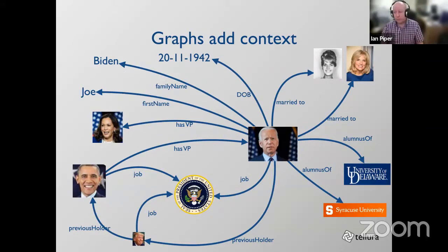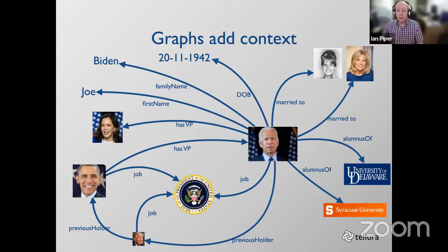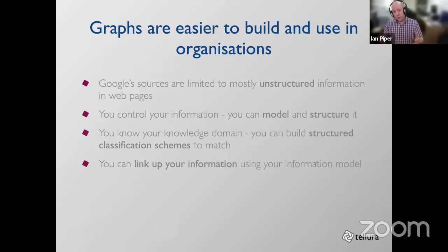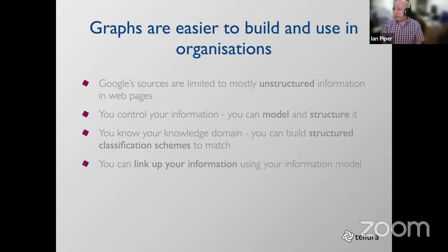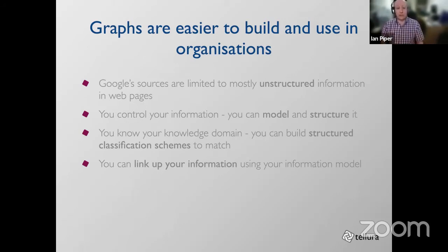Building a graph like this adds value beyond a normal info box. It turns out that working within your own organization is actually easier than what Google has to do, because Google is limited to mostly unstructured information in web pages. You, by contrast, control your information — you can build models, structure it, and know your knowledge domain, so you can classify content and build linked data that gives a rich view of your information spaces. That's knowledge graphs.